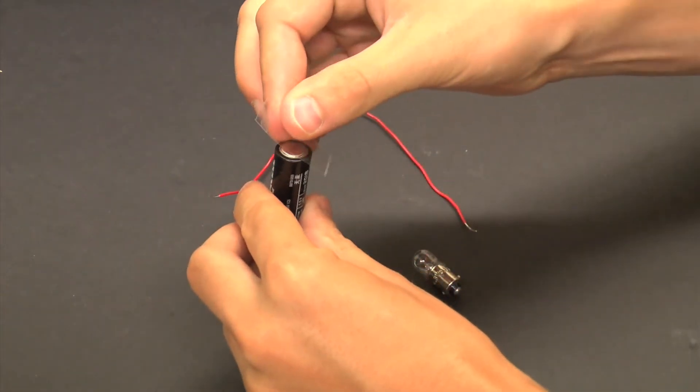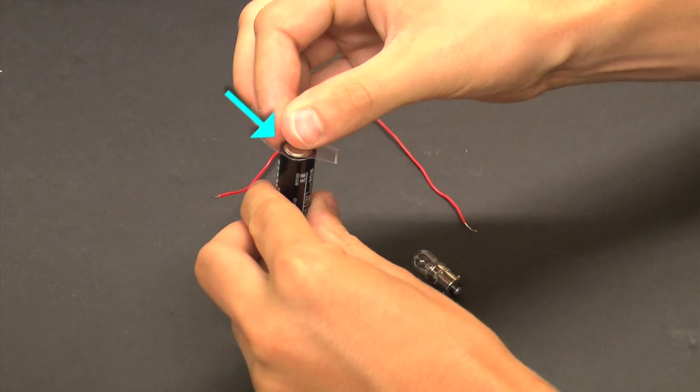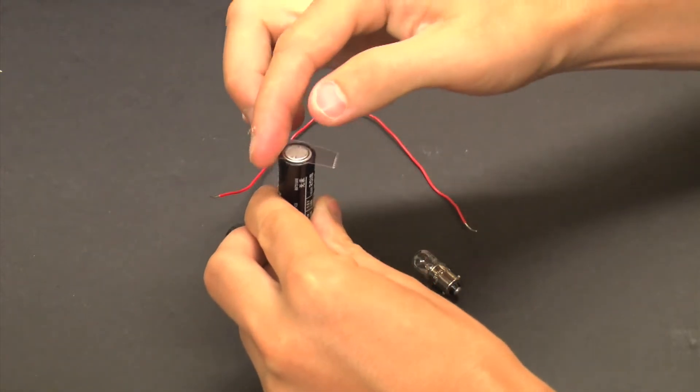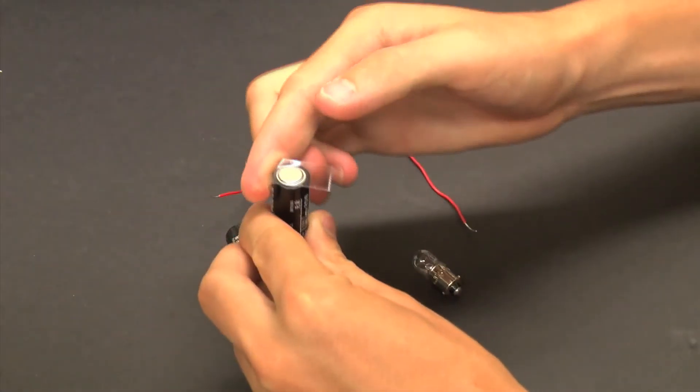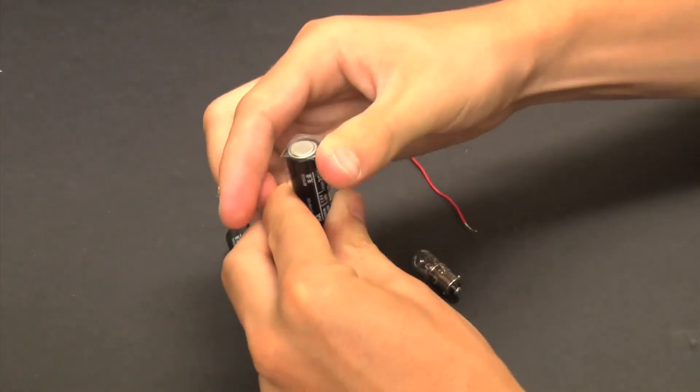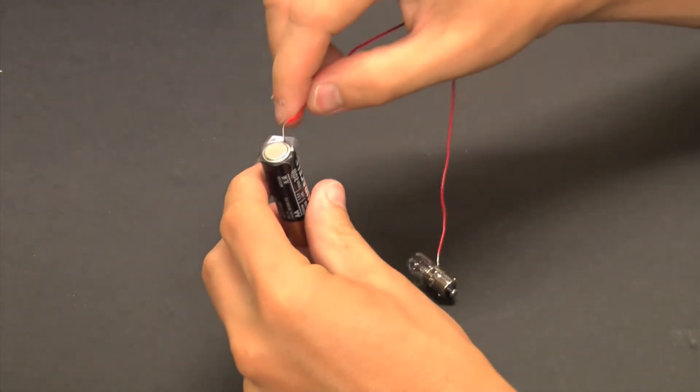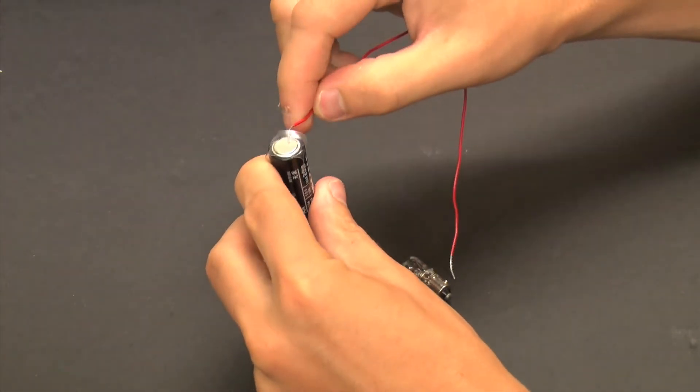Place one end of the wire on the negative terminal of the battery and the other end of the wire on the light bulb just below the glass casing. You may need tape to hold the components together. Then, rest the light bulb on the positive terminal of the battery as demonstrated.